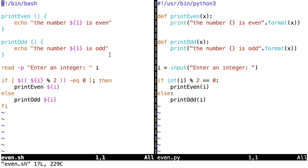On the left hand side you can see even.sh, and on the right hand side you can see even.py, so the bash script on the left hand side and the python script on the right hand side. And you can tell this from the shebang at the top of each script. So what I'd like to do is talk a little bit about how these scripts differ and then how they're similar.